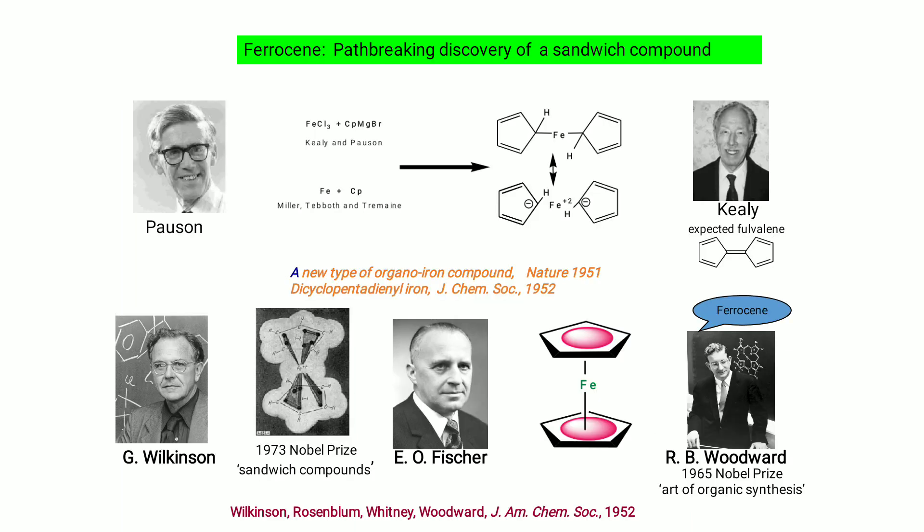The first and most important sandwich compound is ferrocene — a path-breaking discovery made by Pauson, Kealy, Wilkinson, Fischer, and Woodward. This new type of organo-iron compound was found in 1951, also called dicyclopentadienyl iron. For this sandwich compound, Wilkinson and Fischer were awarded the Nobel Prize in 1973. Woodward received the Nobel Prize in 1965 for the art of organic synthesis.